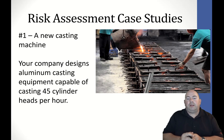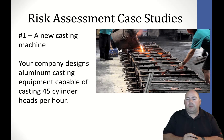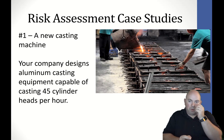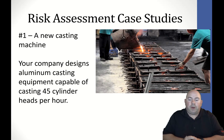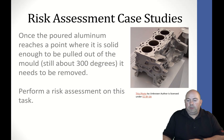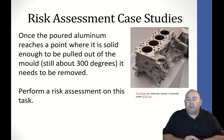The very first one: let's say we are a company that builds casting equipment — equipment used to mold and pour molten aluminum into automotive parts. Our company designs aluminum cast equipment capable of casting 45 cylinder heads per hour. Once the poured aluminum reaches a point where it is solid enough to be pulled out of the mold — still above 300 degrees — it needs to be removed. Perform a risk assessment on this task.